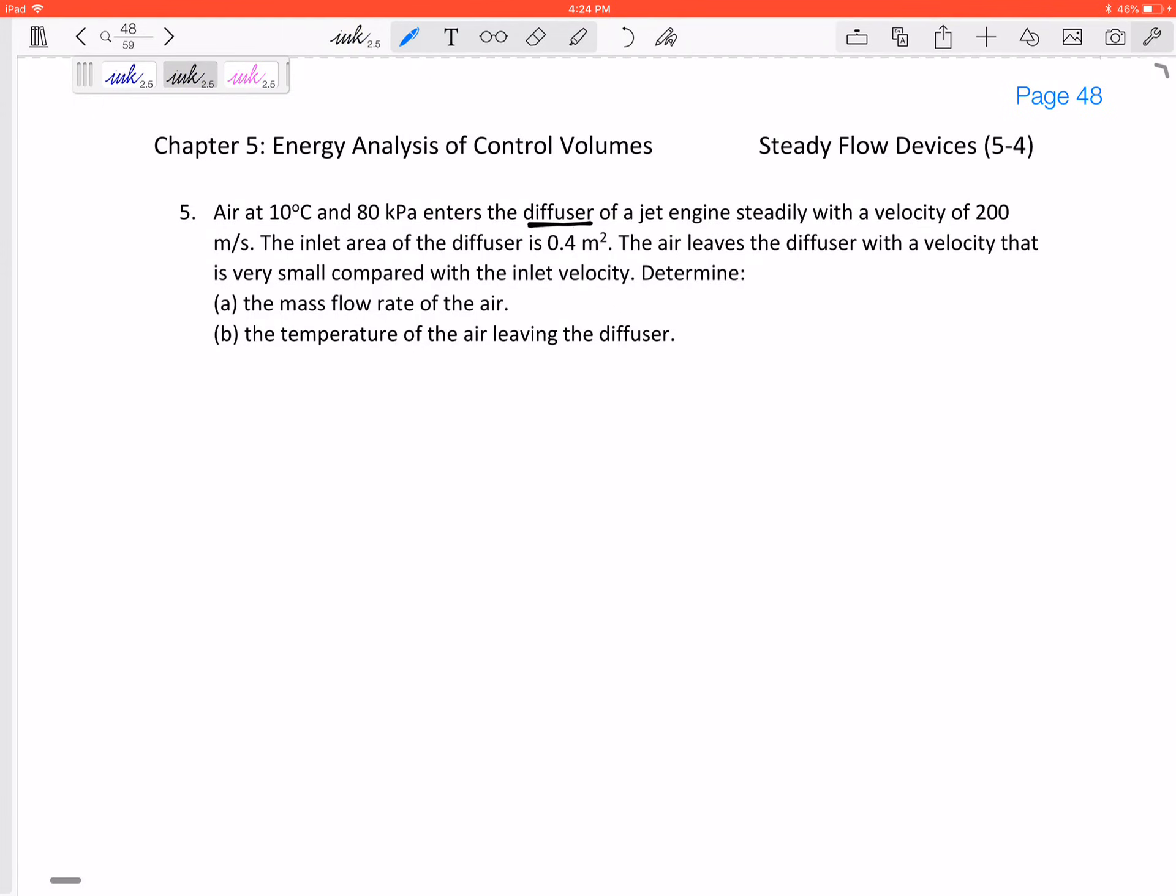Inlet area is 0.4 meters squared. The air leaves the diffuser with a velocity that is very small compared to the inlet velocity. Determine the mass flow rate of air and the temperature of air leaving the diffuser. So this is a diffuser, it's a steady flow device, so there's no changing in time.